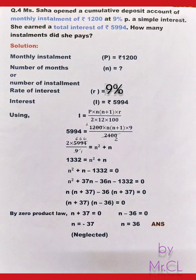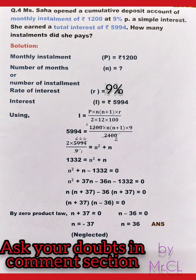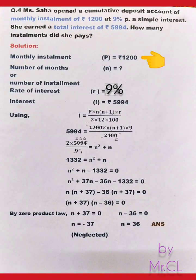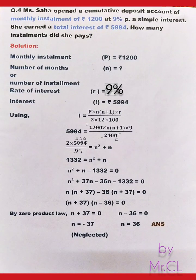Fourth type of question: Miss Saha opened a cumulative deposit (RD) account with monthly installments of ₹1200 at 9% per annum simple interest and earned total interest of ₹5994. How many installments did she pay? Given: P = ₹1200, n = ?, R = 9%, I = ₹5994.